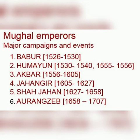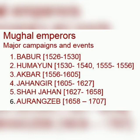Akbar (1556–1605): Akbar was 13 years old when he became emperor. His reign can be divided into three periods. First period, 1556–1570: Akbar became independent of the regent Bairam Khan and other members of his domestic staff. Military campaigns were launched against the Suris and other Afghans, against the neighboring kingdoms of Malwa and Gondwana, and to suppress the revolt of his half-brother Mirza Hakim and the Uzbeks.